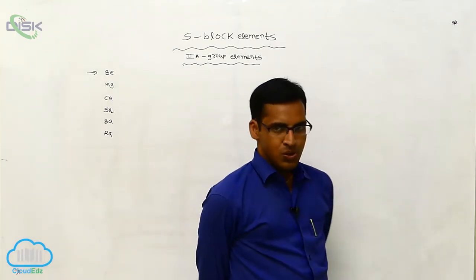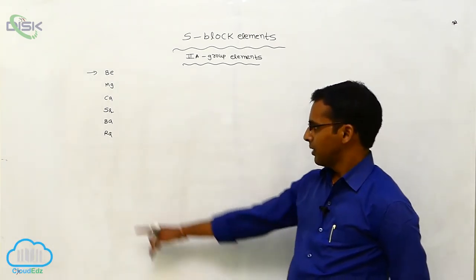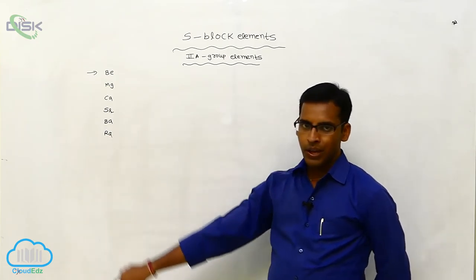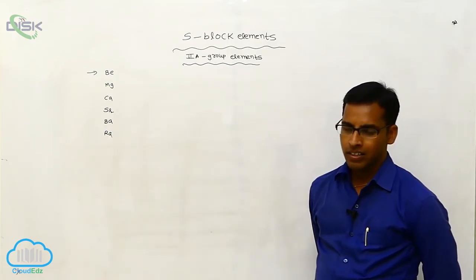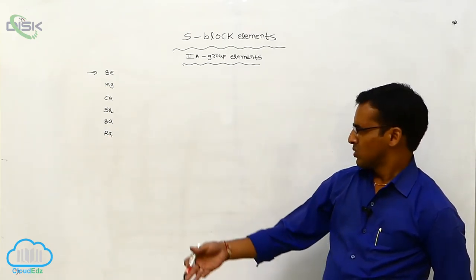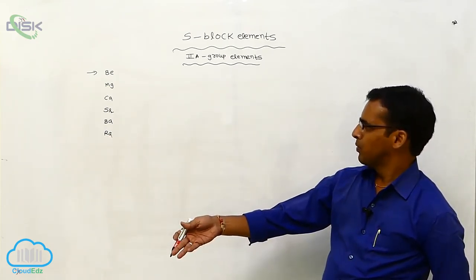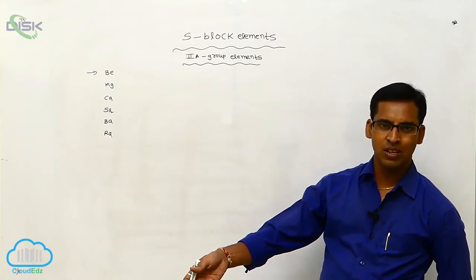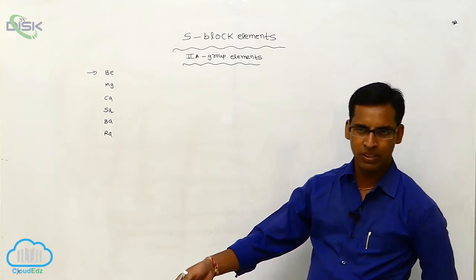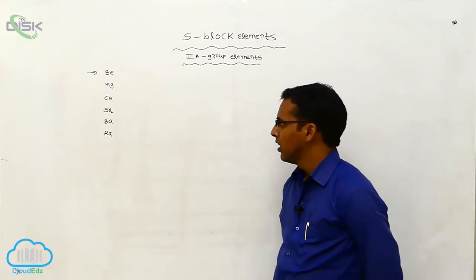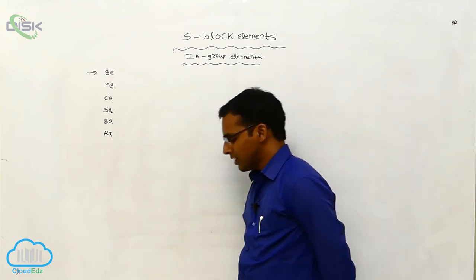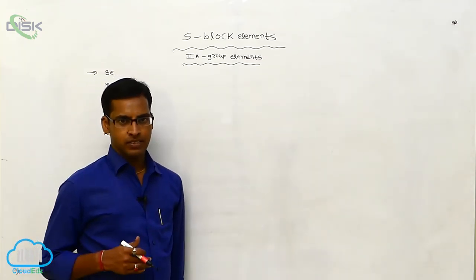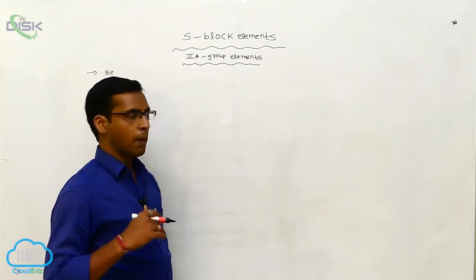Radium is a radioactive element that is unstable. Before this class we discussed first group elements, in which francium is also a radioactive element. After this we discussed properties.